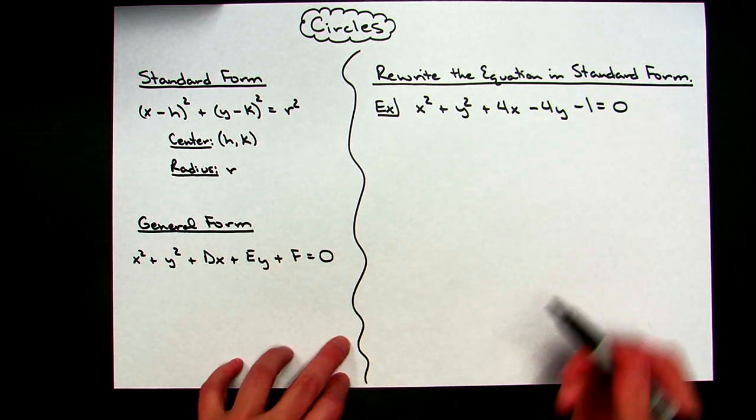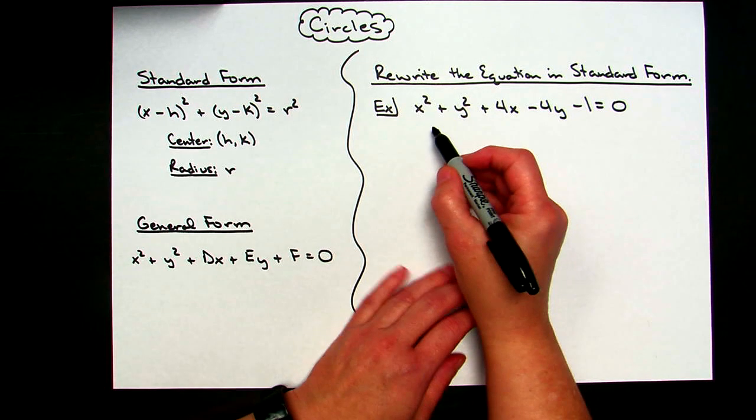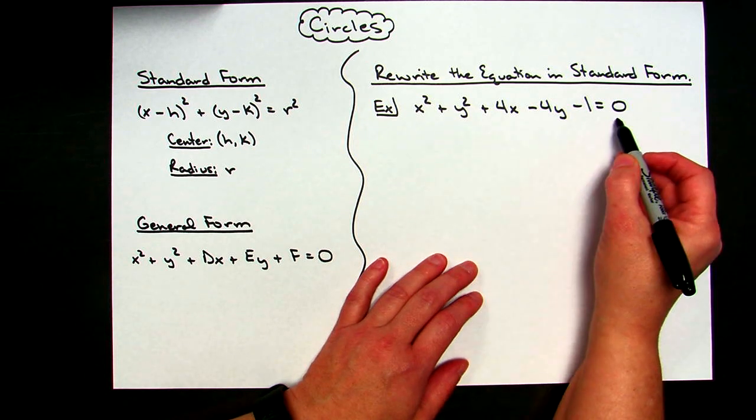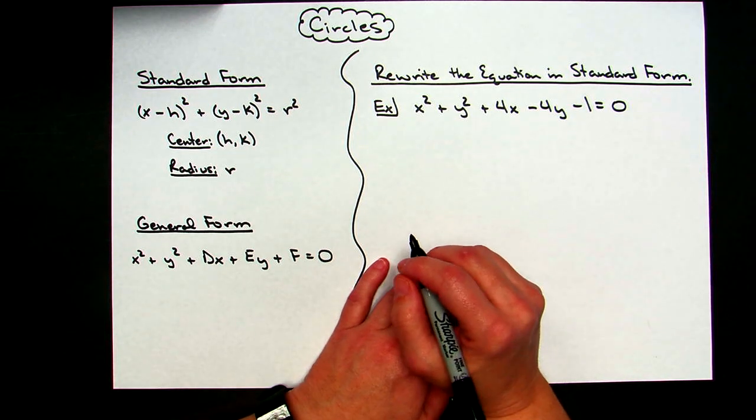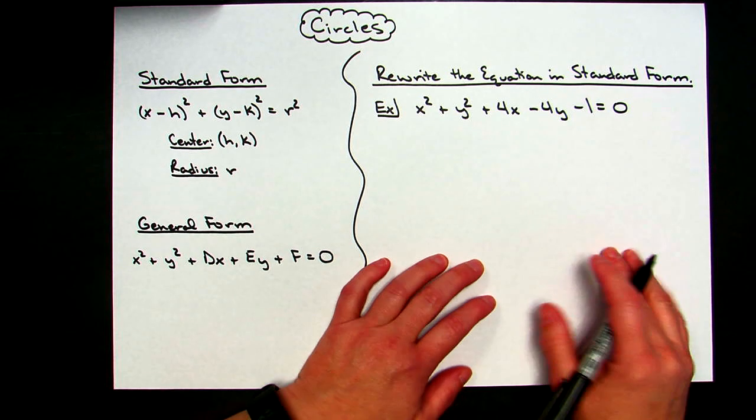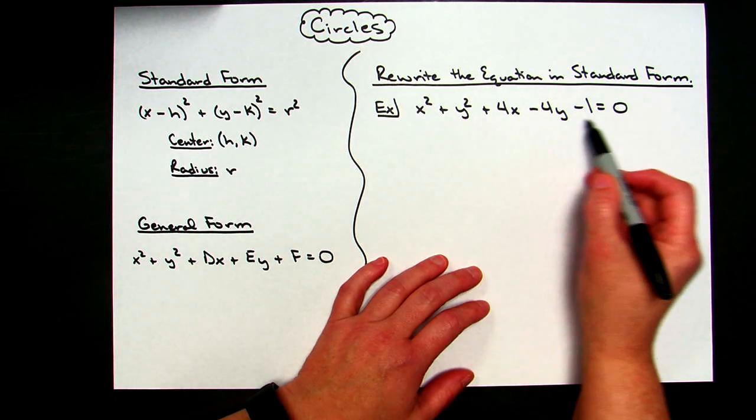So it is helpful if you know how to take a circle in general form here and rewrite it in standard form. We're going to do that by using completing the square, which is a pretty common thing from algebra 2. So I have my circle in general form right here.